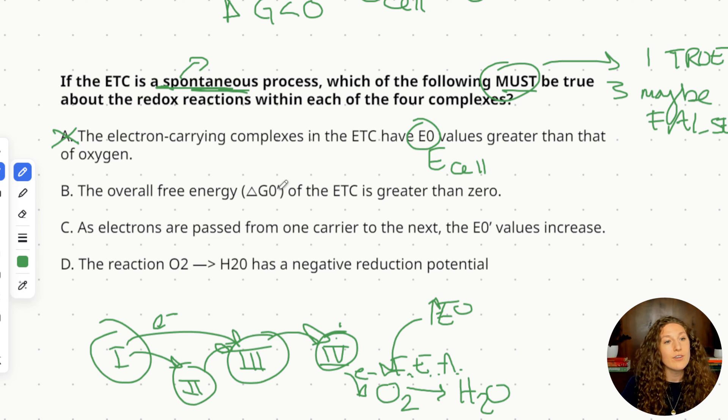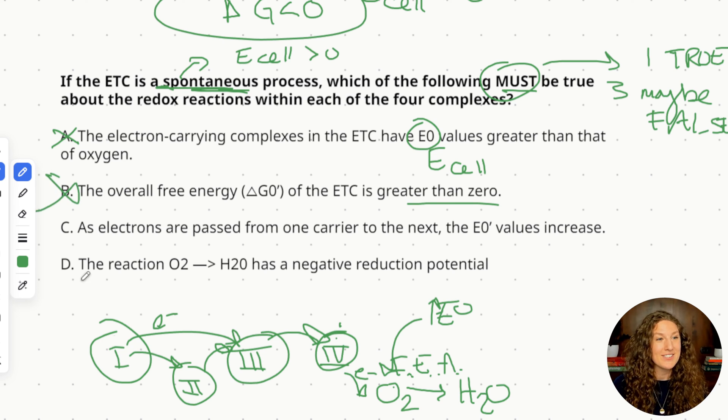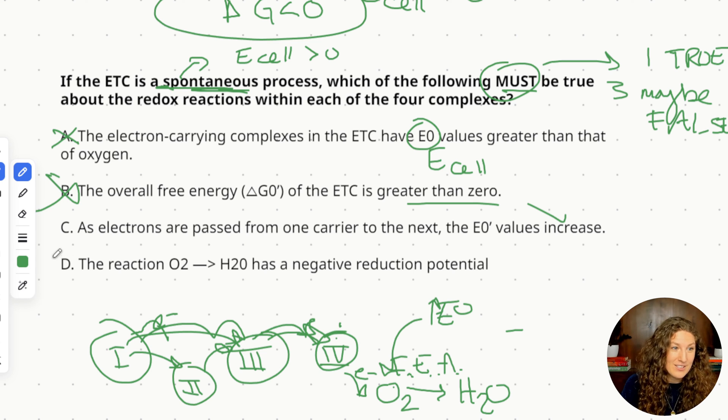So far so good. The overall free energy delta G of the electron transport chain is greater than zero, nope that is opposite our prediction we know that it's actually less than zero so it can't be our answer here. So now we're just down to C and D. So as electrons are passed from one carrier to the next the E naught values increase. That sounds a little bit like our prediction based on answer option A where as we go down the chain the reduction potentials need to get bigger and bigger so that the electrons want to keep going and getting gained by the next thing down the line. So that sounds pretty good, that sounds at least possible we'll leave that one. The reaction O2 to H2O has a negative reduction potential. If it had a negative reduction potential that means it's unlikely to happen, unlikely to be reduced and that would mean that this is not a spontaneous process. So D also feels pretty wrong with our prediction and C is our best possible answer.